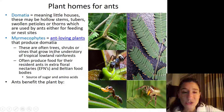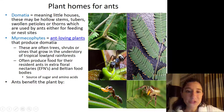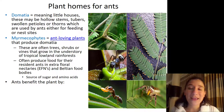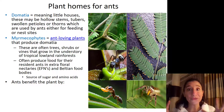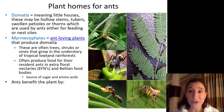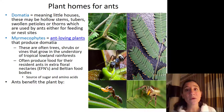Myrmecophytes are ant-loving plants that produce these domatia. Oftentimes these are trees, shrubs, or vines that grow in the understory of tropical rainforests. In these environments, conditions are perfect for lots of plants to grow, meaning there's a lot of competition. So the plants have co-opted the ants to serve as bodyguards, removing other plants that might encroach on their space and try to steal their nutrients.